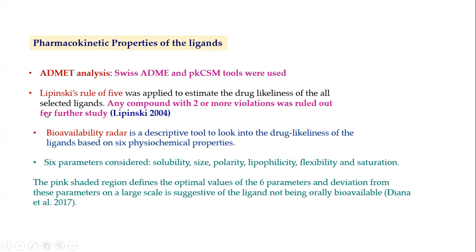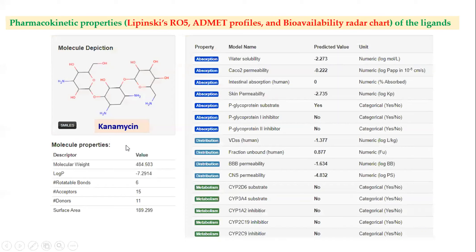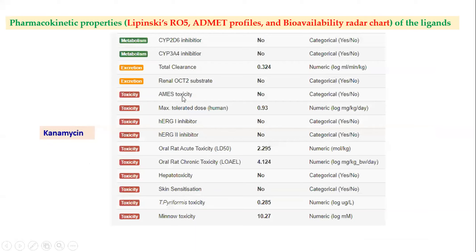For Kanamycin, the bioavailability score is very low at 0.17, though it is a very good antibiotic against Mycobacterium tuberculosis and other bacterial infections. This drug followed Lipinski's Rule with only two violations among four: the hydrogen bond acceptor count is 15 (higher than 10) and the hydrogen bond donor count is higher than 5. However, the molecular weight is within 500 Da. There was no skin sensitivity, hepatotoxicity, and Ames toxicity was negative—meaning no carcinogenic interactions.